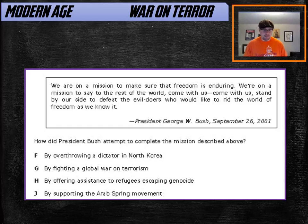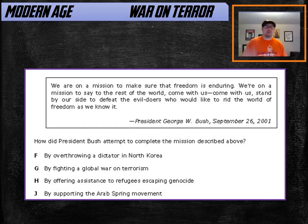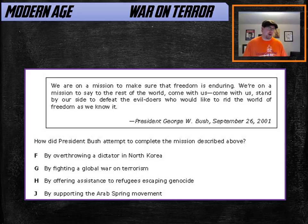President Bush gave a speech saying we are basically going to fight for freedom and rid the world of the evildoers who would fight freedom. He intended to do that by fighting a global war on terrorism. There's a reason we call this the War on Terror — because it wasn't limited to al-Qaeda or Afghanistan; it was broad.